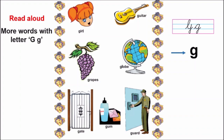Now, let us read words with letter G. Repeat with me. And look at the bottom — we have G, G, G, G, G. Now, let us look for small print G in the word girl. Yes, this is small print G.